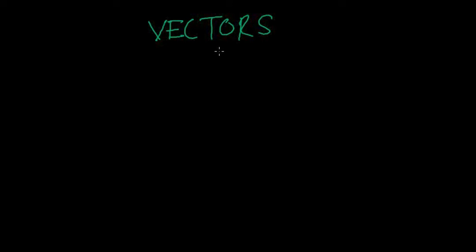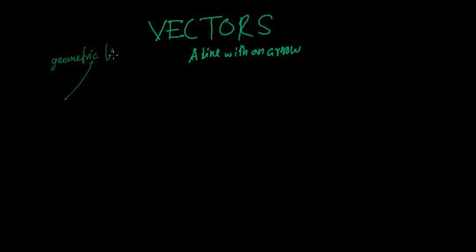A vector is just a line with an arrow. A geometric line has a beginning and an end, but a vector line also has a direction. In mechanics, when we talk about a vector line, we are using the concept of mathematical modeling where everything is simplistic — it's not realistic. A line with an arrow means 'go in this direction.' It's essentially 1D.